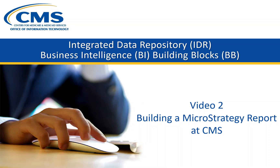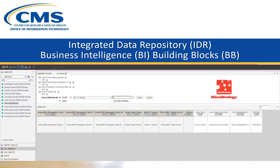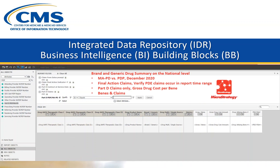Welcome to Part 2 of 3 of the Building Blocks video tutorial. This video will go through the minute steps of creating a report to include the MicroStrategy design and report modes, and history list options. Today's use case will look at brand and generic drug utilization amongst beneficiaries for the Medicare Advantage Prescription Drug Program. Metrics will include gross drug cost amount and PDE fills. We will intersperse BI tool technical training as we go.